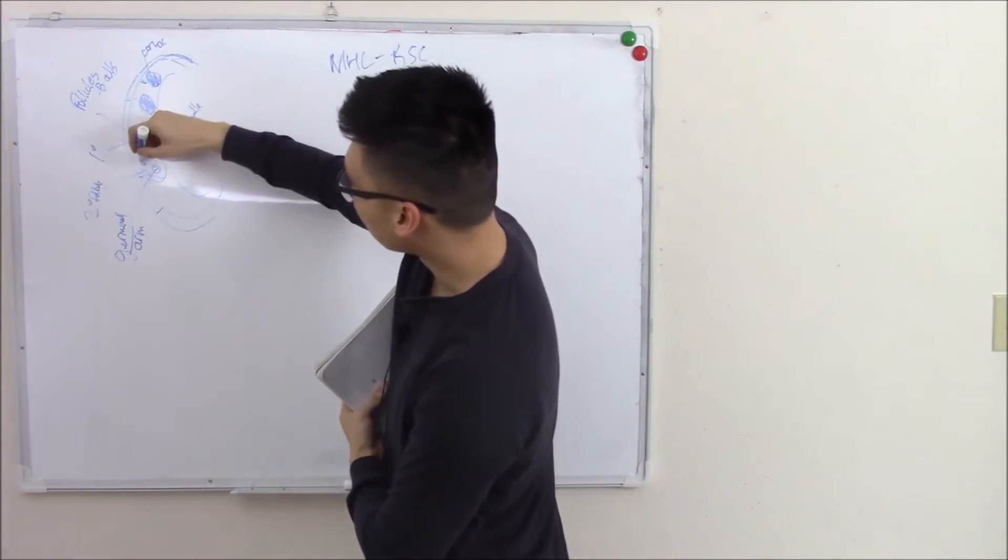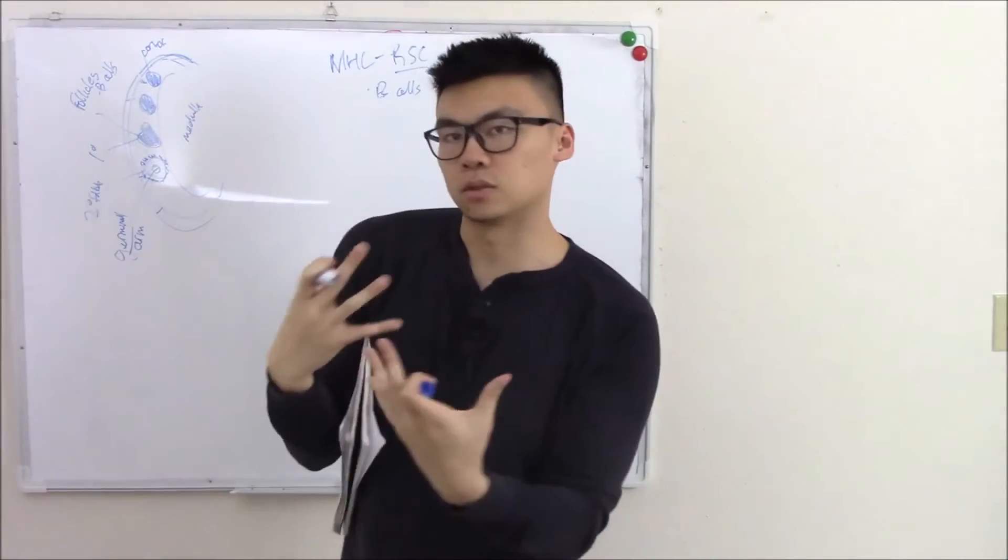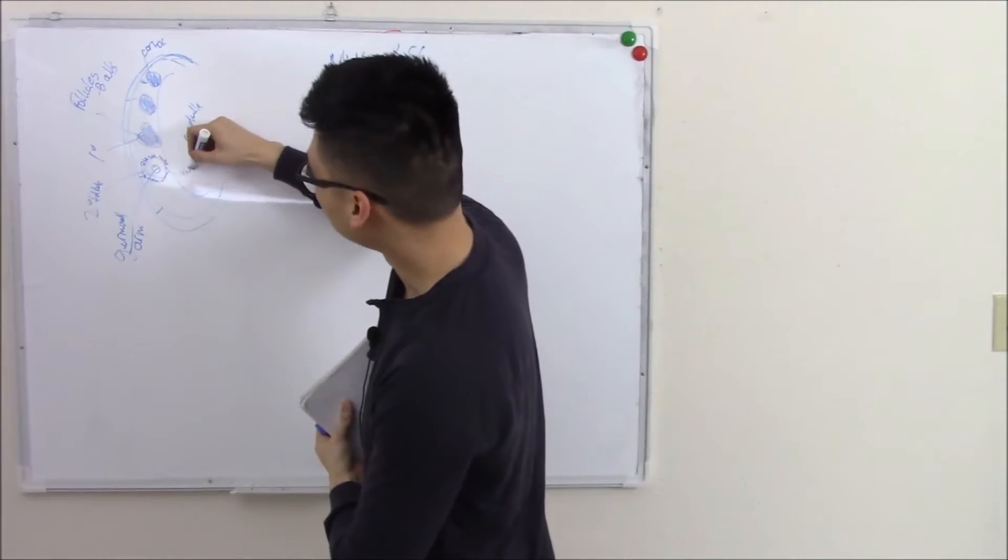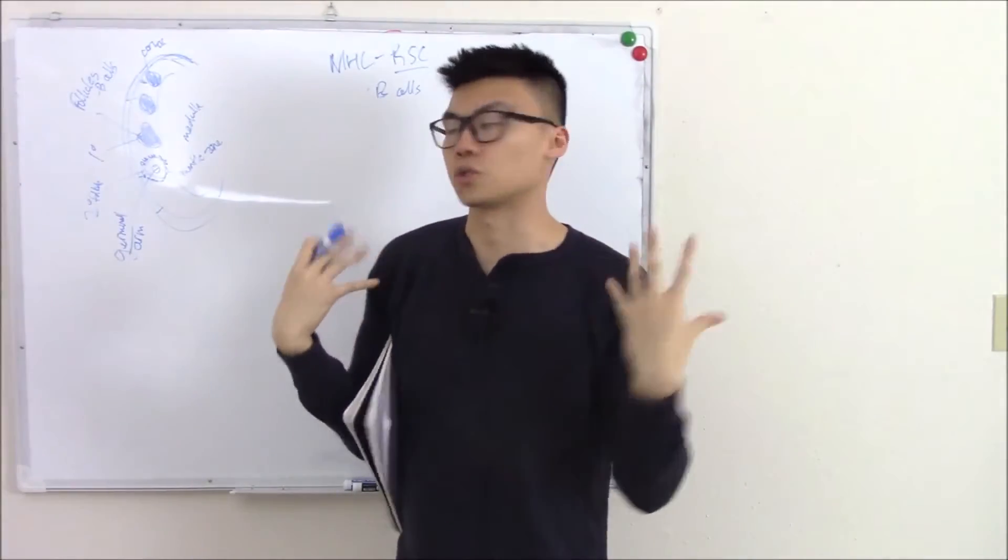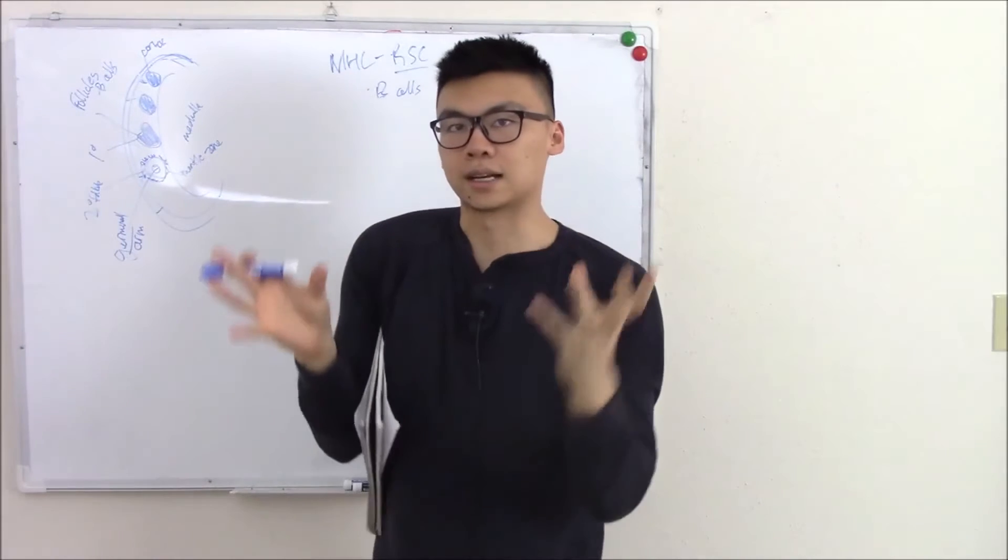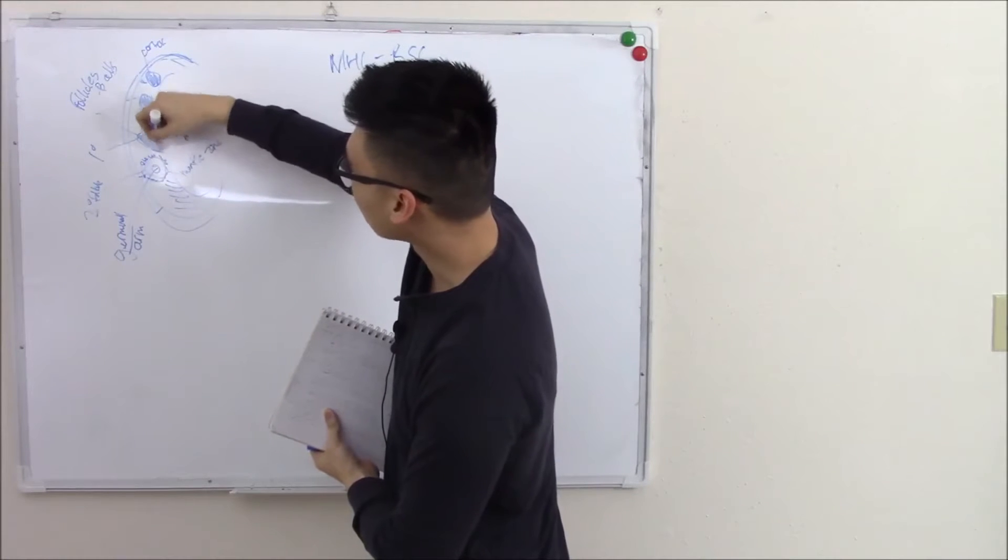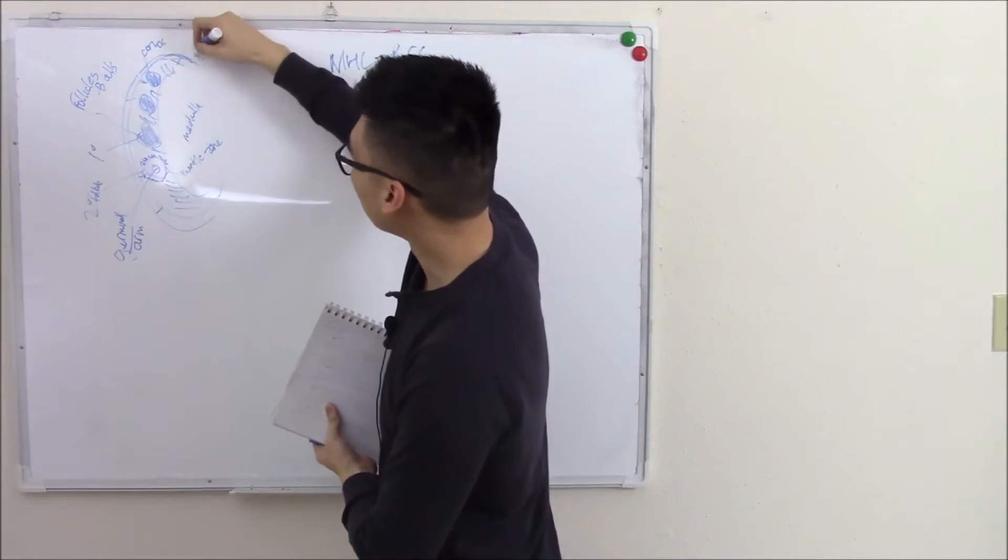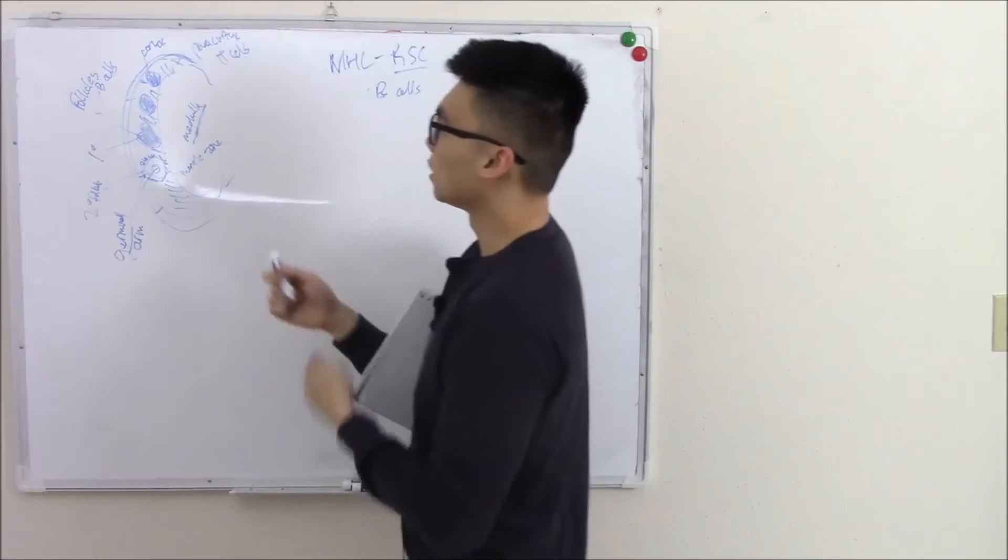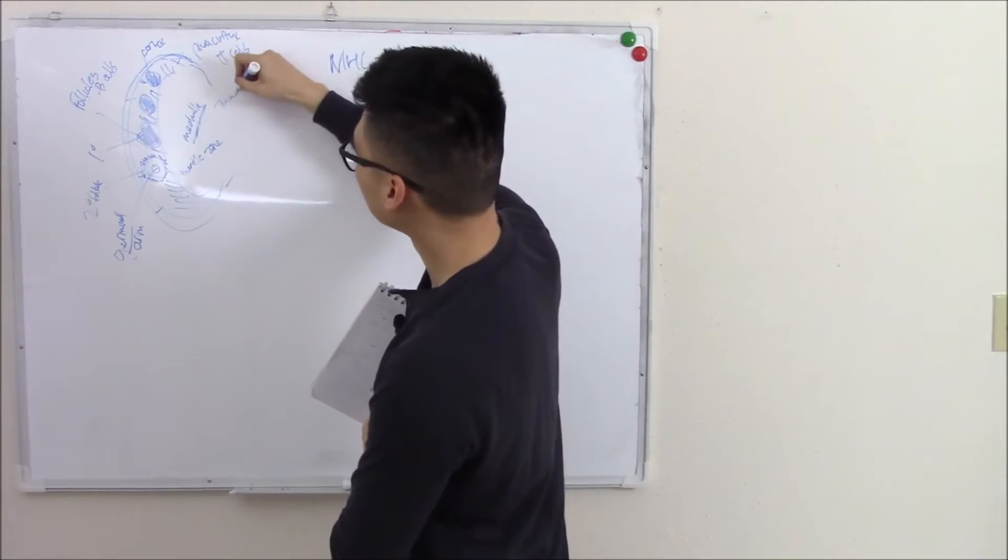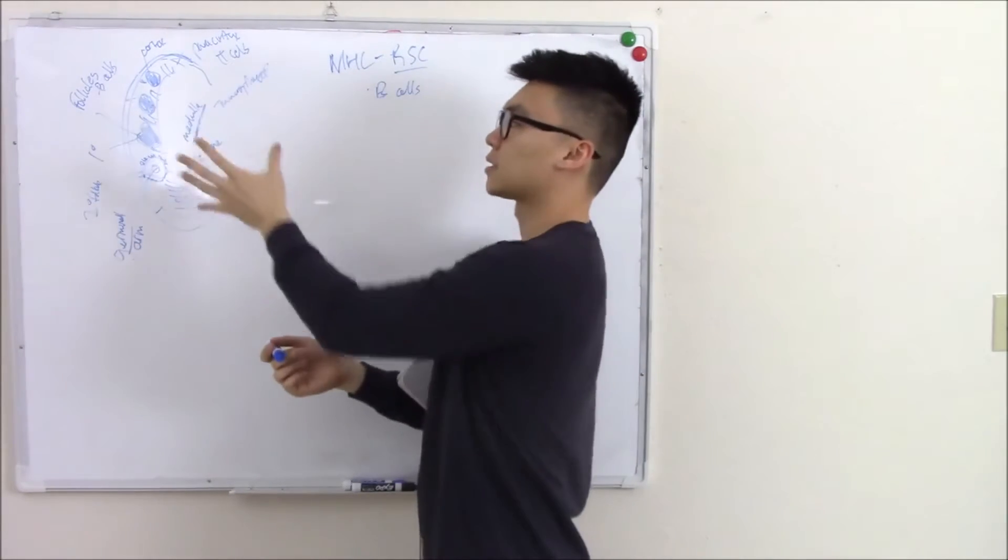Surrounding your follicle, you have other B cells that kind of shroud it. We call that the mantle zone. Mantle traditionally means like a cloak or a shroud. So the mantle zone is just B cells that surround the follicle. That's all in your cortex. And around your cortex, you have your paracortex, and in your paracortex, that's where your T cells are. Finally in your medulla, that's where your macrophages are. So that's the lymph node structure in a nutshell.